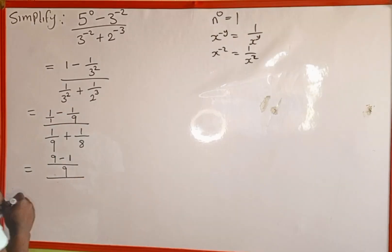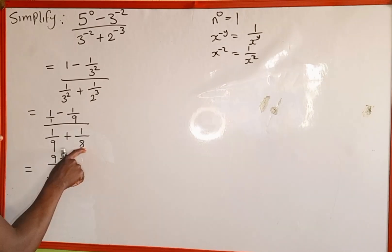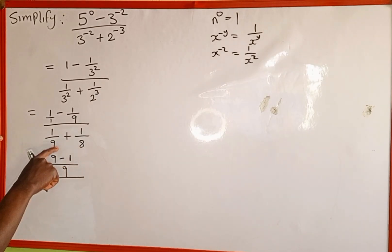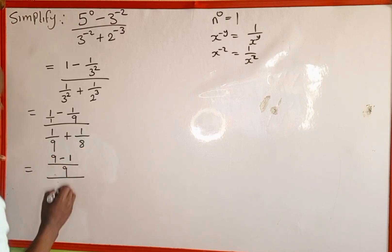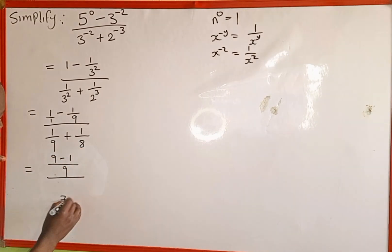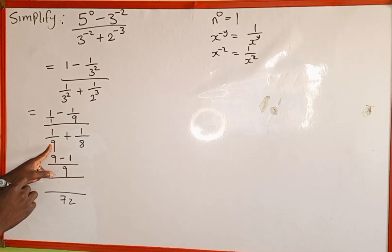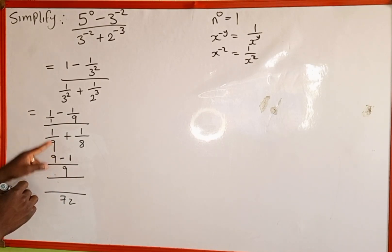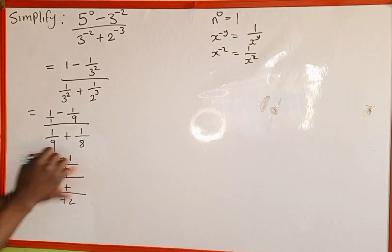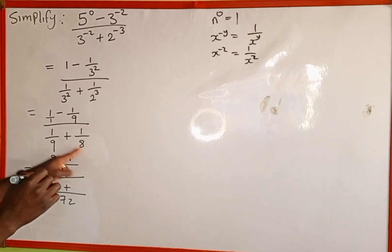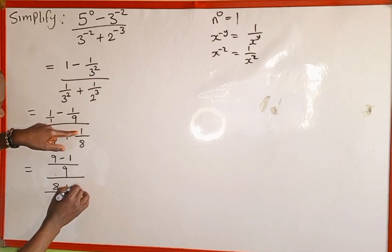Everything divided by — we find the LCM of 9 and 8. There's no common factor, so we multiply them together: 9 multiplied by 8 gives us 72. We draw a division line: 72 divided by 9 gives us 8, then 8 multiplied by 1 is 8. Plus: 72 divided by 8 is 9, then 9 multiplied by 1 is 9.